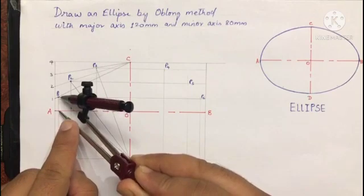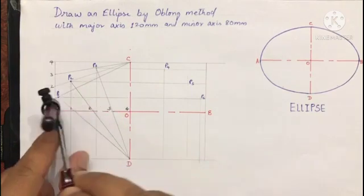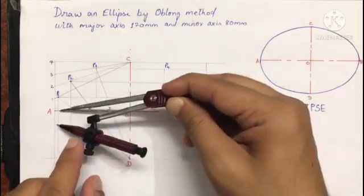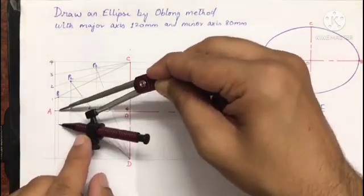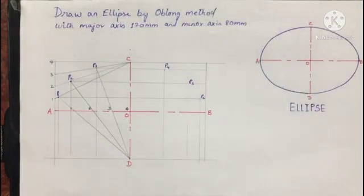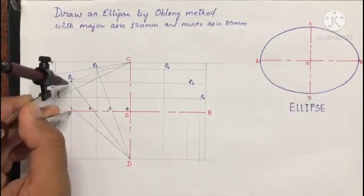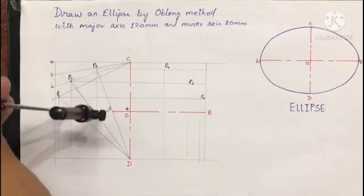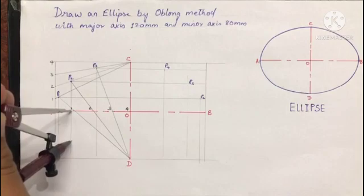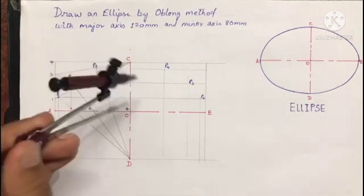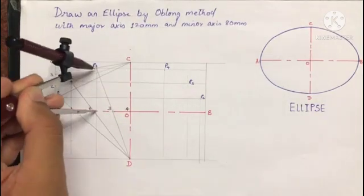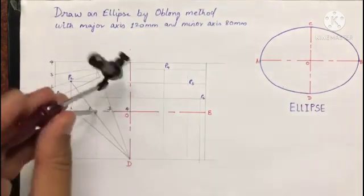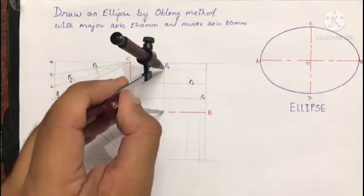First measure point P1 from the horizontal axis and copy it in the below rectangle. Then point P2, measure it from the horizontal axis and copy it in the below rectangle. Then point P3.